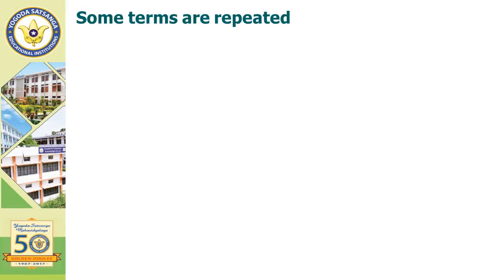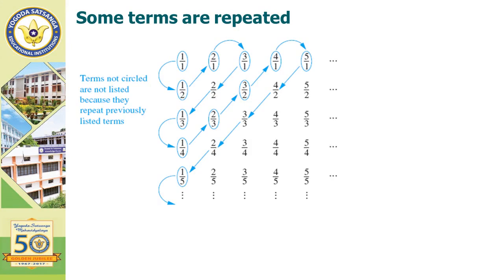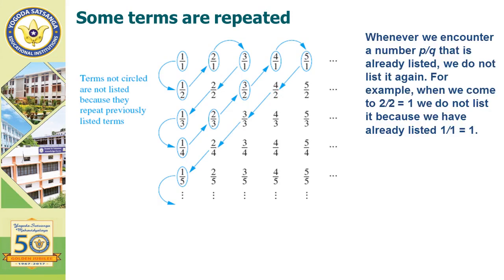In this way, we rearrange the numbers: 1/1, then 1/2, 2/1, 3/1, and then 1/3. Since 2/2 equals 1, which is already listed as 1/1, we eliminate this number. We continue with 1/4, 2/3, 3/2, 4/1 — these are the unique numbers in the list. Whenever we encounter a number P/Q that is already listed, we do not list it again. For example, when we count 2/2, it equals 1, and we do not list it because we have already listed 1/1 equals 1.